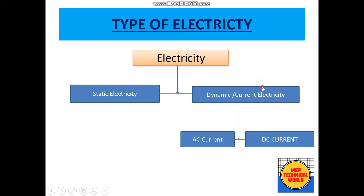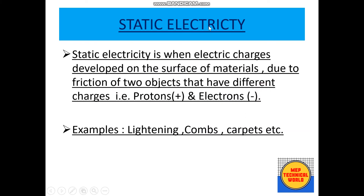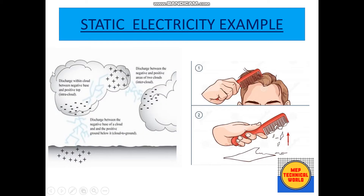Now let's look at static electricity. Static electricity is when electric charges develop on the surface of a material due to friction between two objects that have different charges — that is, protons having positive charge and electrons having negative charge. Some examples of static electricity are lightning, combs, and friction on carpet.